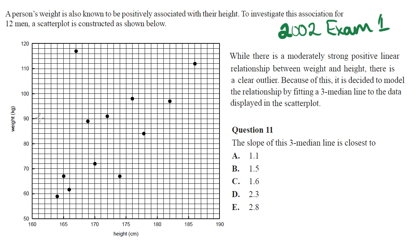Going across the page, I identify the first four points for the left group and place the split, then the next four for the middle group, leaving four remaining. For the left group, going up the page the points are first, second, third, fourth — so the median falls between the second and third. Going across, again it's between the second and third. The median point is at those intersecting midpoints.